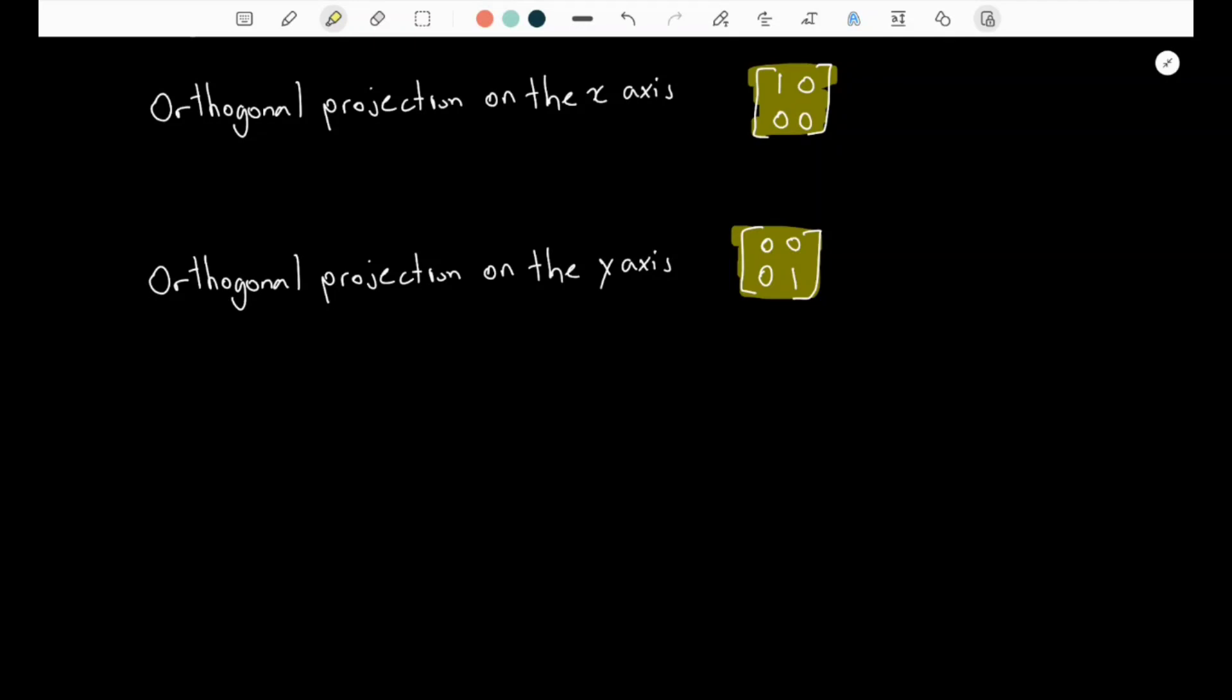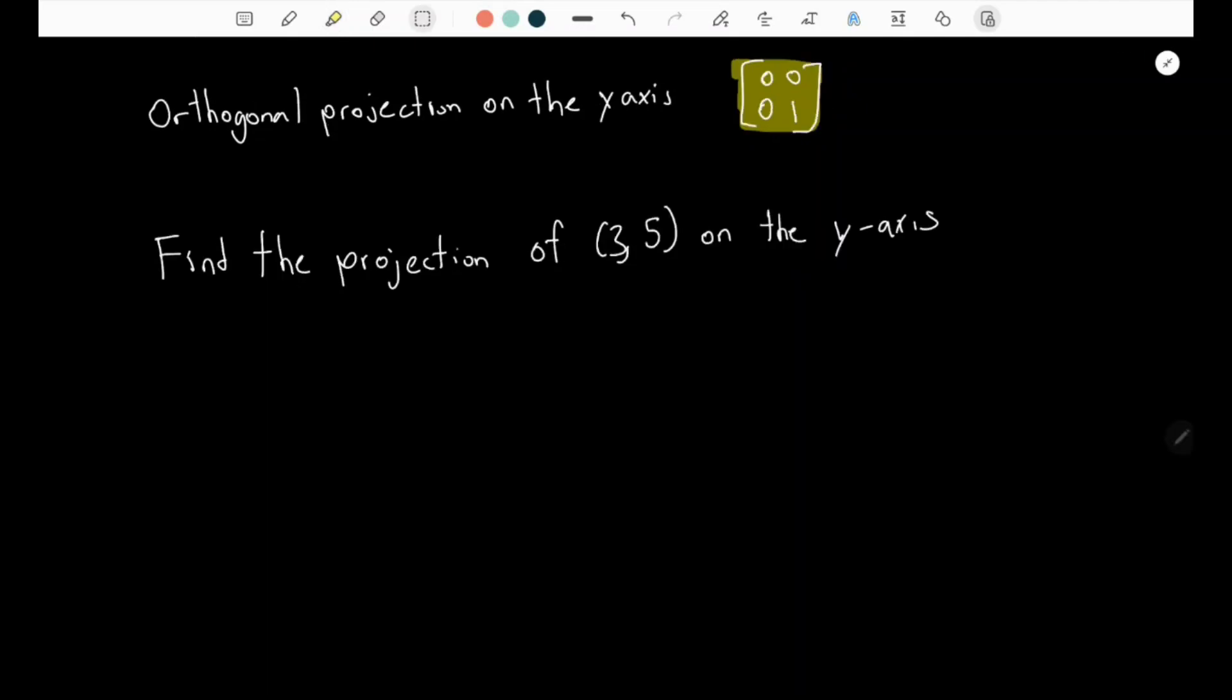In this example question we have to find the projection of this matrix on the y-axis. So the standard matrix is [0,0; 0,1] and we multiply it by (3,5). Let's do that now. This is the working, and the final answer you will get is (0,5), and this is the final answer.